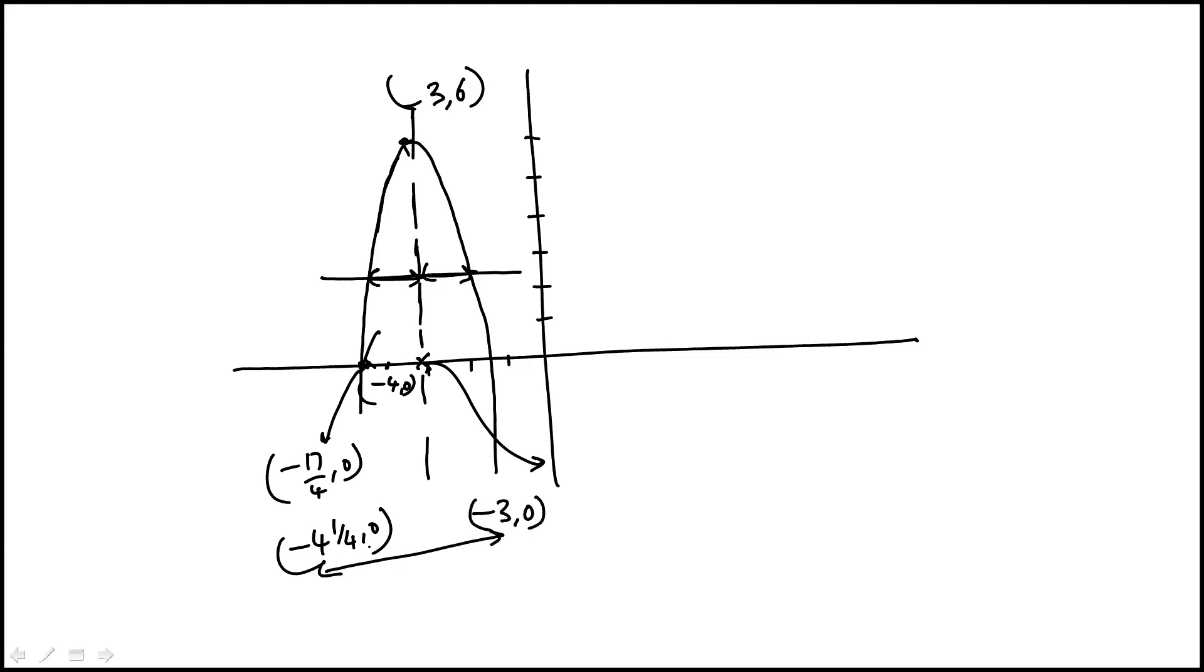Its distance from that first x-intercept is 1 and 1/4 units, which means the other x-intercept would be to the right 1 and 1/4 units. Therefore its coordinates would be -3 plus 1 and 1/4, which would be, let me just do it, it's sometimes confusing with these mixed fractions, -7/4, 0, which is choice B.